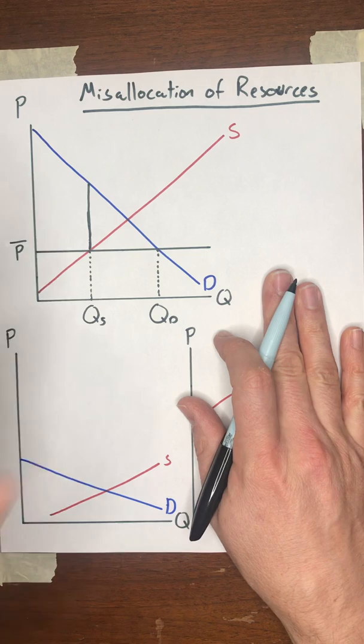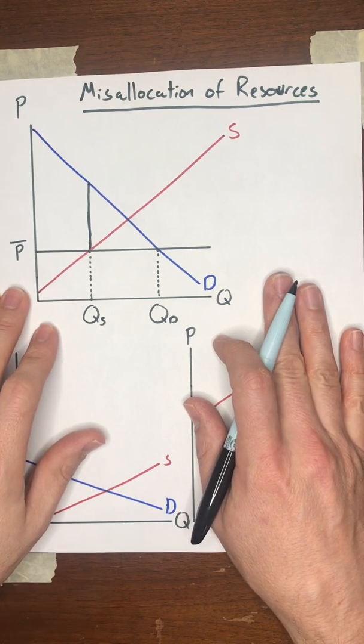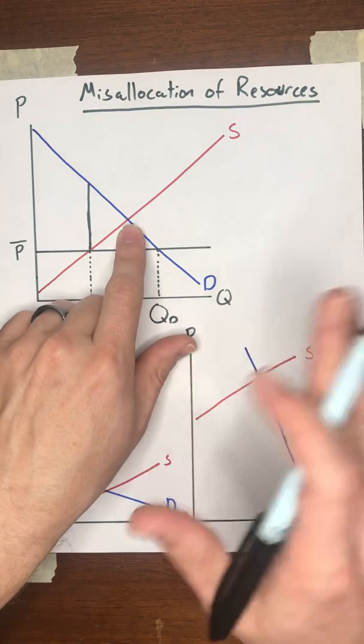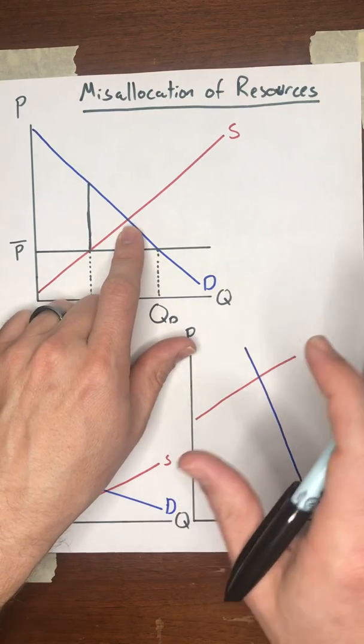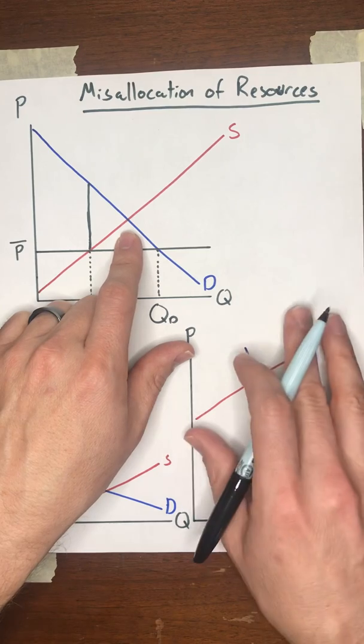Oftentimes, in the United States anyway, most of the time that price controls go into effect is after natural disasters. And I'm planning on making a separate video on this with regards to price controls and COVID-19, so stay tuned.